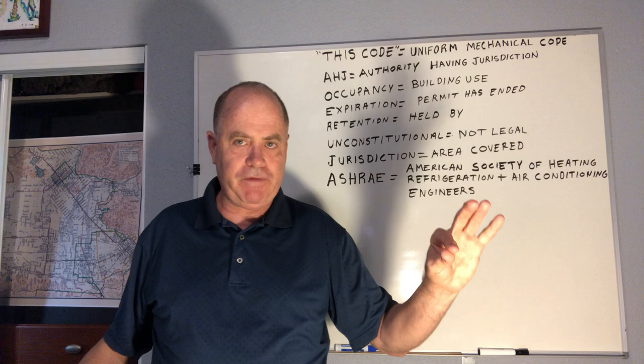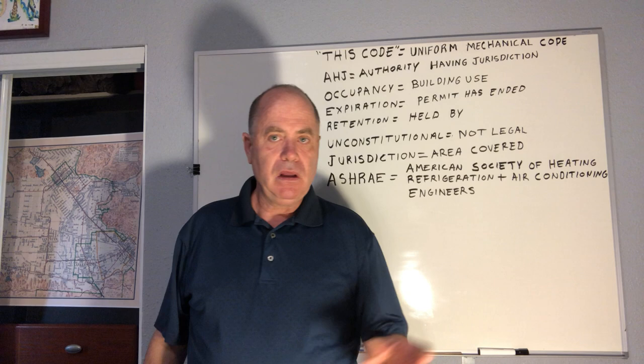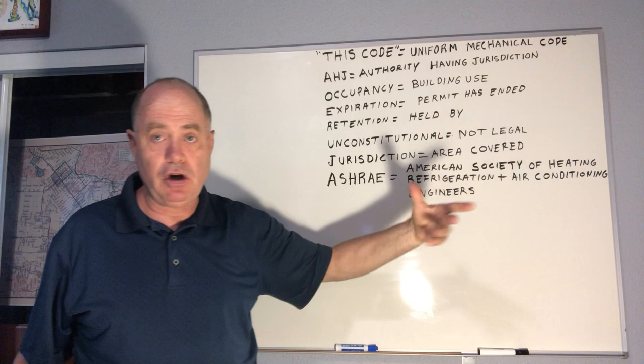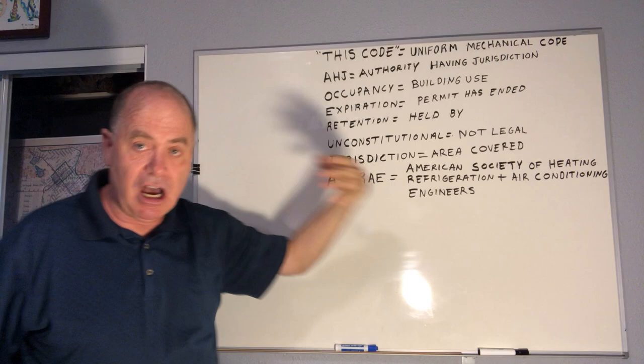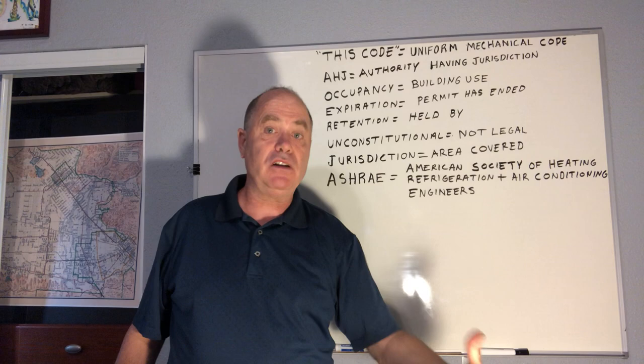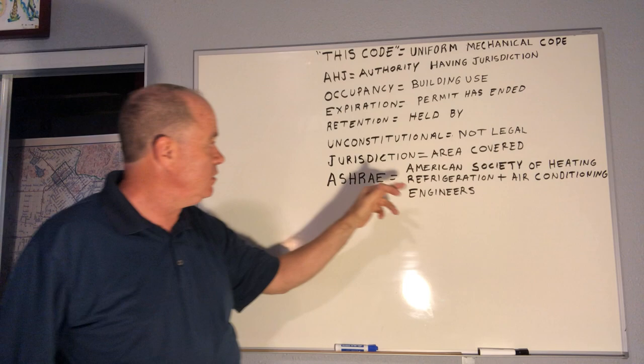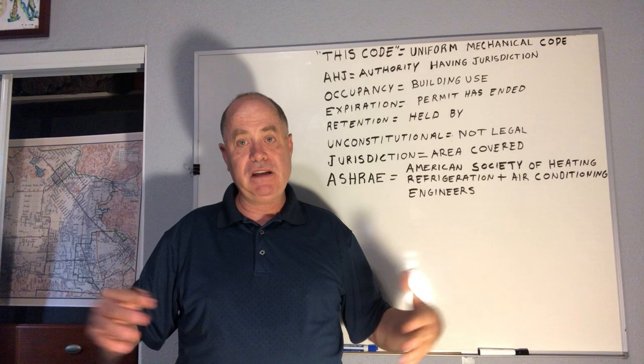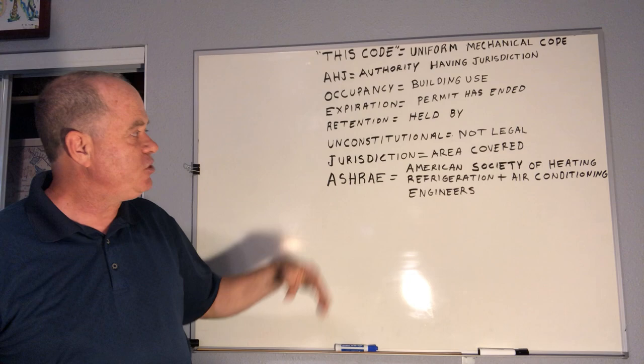Before we finish, let's review the key terms: 'This code' means the Uniform Mechanical Code. AHJ is the authority having jurisdiction. Occupancy is the building use. Retention means plans are kept at the job site. Unconstitutional means not legal. Jurisdiction is the area covered — in our case, Los Angeles County under the LA Department of Building and Safety. ASHRAE stands for the American Society of Heating, Refrigeration and Air Conditioning Engineers. That ends the lecture on chapter one: Administration.